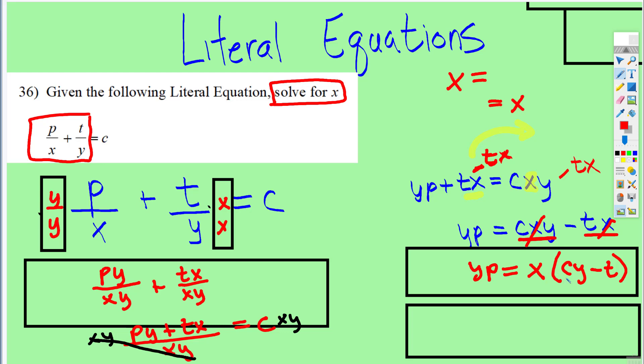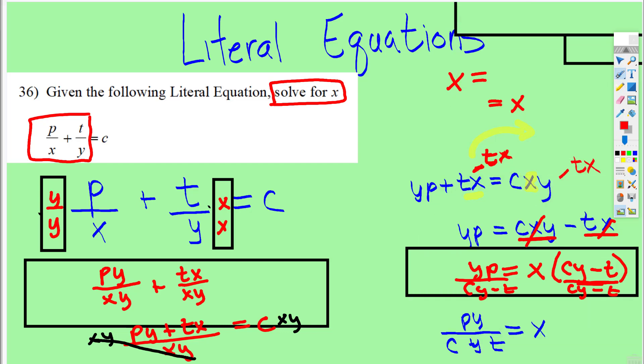And now look at it. This expression is attached by multiplication. So we're just going to divide both sides by the cy subtract t. And what you're left with is x is equal to py, I put it in alphabetical at the end, over cy subtract t. Just like that.